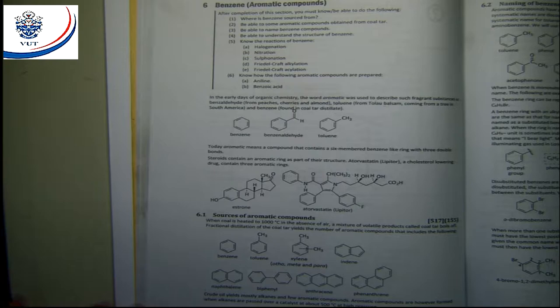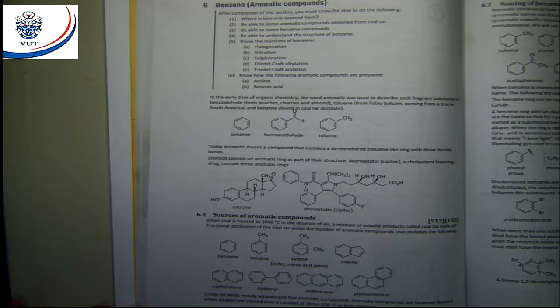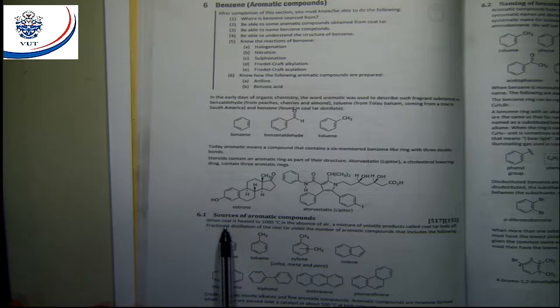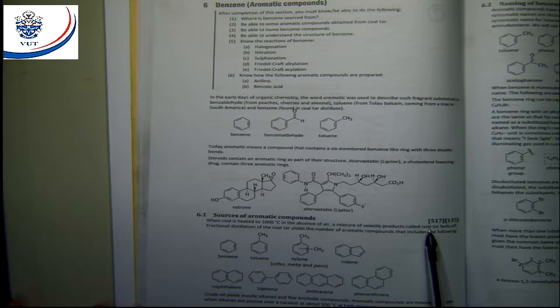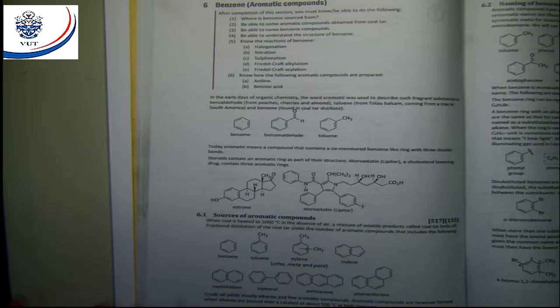We have a totally different definition for aromatic compounds now. We are not going to do a very in-depth study of benzene — for us it's just an introduction. We'll look at the basic way of naming benzene compounds, a little about its structure, and a few reactions. Benzene is usually produced when coal is heated to very high temperatures in the absence of air, giving a mixture of volatile products. In the fractional distillation of coal tar, we find compounds like toluene, xylene, and naphthalene.